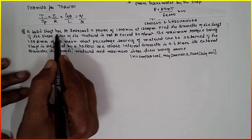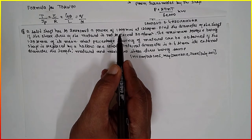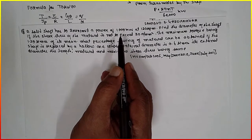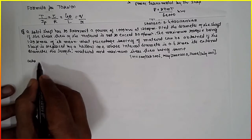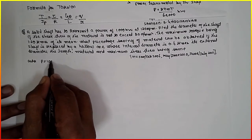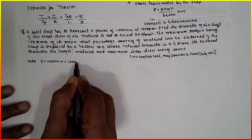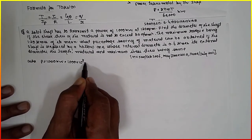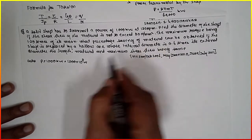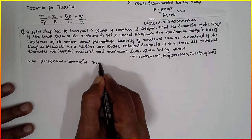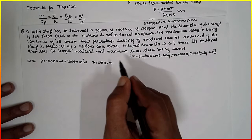A solid shaft has to transmit a power of 1000 kilowatts. The data given is: P is equal to 1000 kilowatts at N equal to 120 rpm. We have to find the diameter of the shaft.